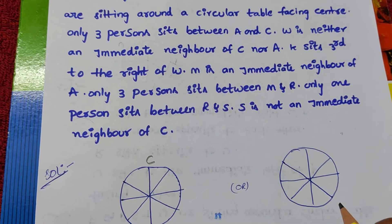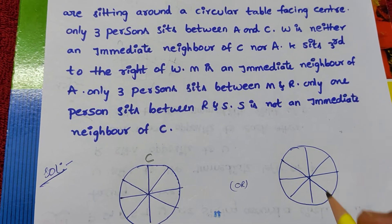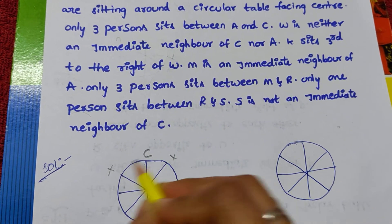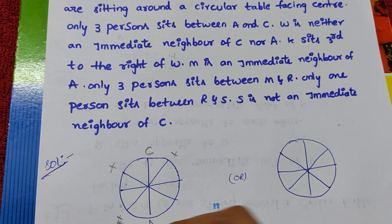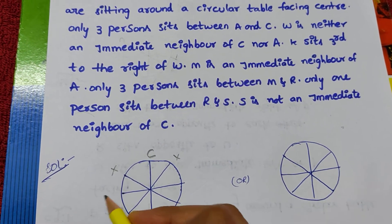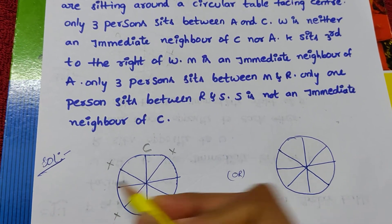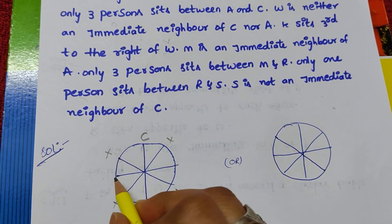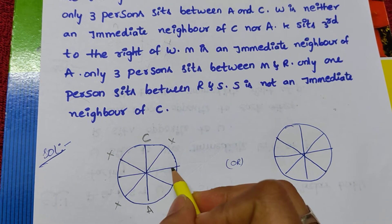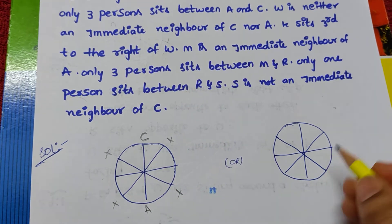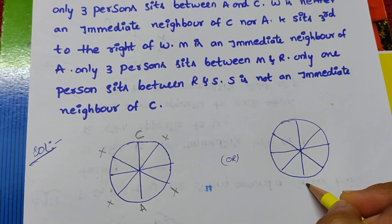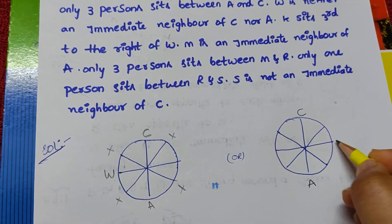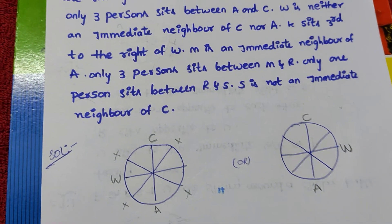Next: W is neither an immediate neighbor of C nor A. So W will not come next to C or next to A. W's position will be here or here. There can be a little confusion, so I am taking two diagrams — one with W on each side — to handle both assumptions.